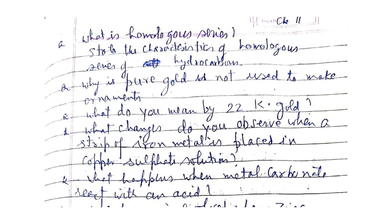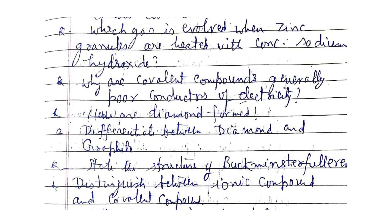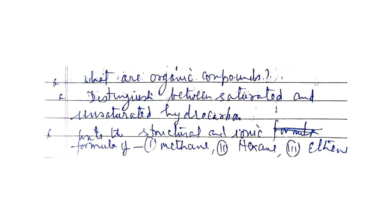What changes do you observe when a strip of iron metal is placed in copper sulfate solution? What happens when metal carbonates react with an acid, and which gas is evolved? Why are covalent compounds generally poor conductors of electricity? How is diamond formed? Differentiate between diamond and graphite. State the structure of buckminsterfullerene. Distinguish between ionic compounds and covalent compounds.